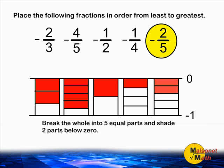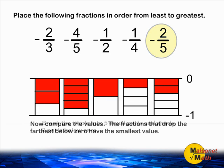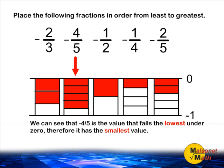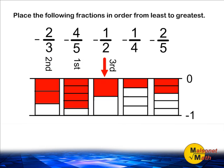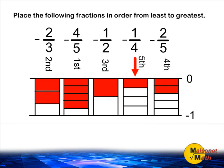Now that we have made a diagram representing each negative fraction, we can compare those values. The fractions that drop the farthest below zero will have the smallest value. Negative four-fifths falls the farthest below zero, therefore negative four-fifths is our smallest value. The next farthest underneath zero is negative two-thirds. After that is negative one-half and then negative two-fifths. And the largest value that we have displayed is negative one-fourth.